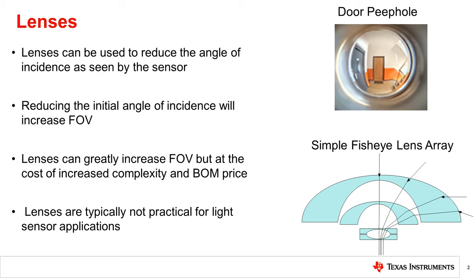To achieve this, peepholes use an ultra-wide angle lens, sometimes called a fisheye lens, to increase the area one can see by bending the light. The problem of field of view for a light sensor is very similar to the problem of the peephole in a door. A poor enclosure aperture can prevent most angles of light from reaching the sensor. A fisheye lens can bend the light to a lower angle of incidence that can pass through the aperture and reach the sensor, resulting in an increased field of view.